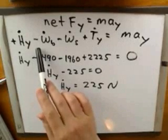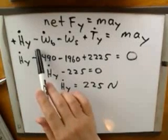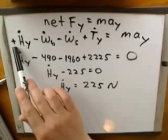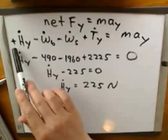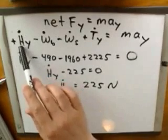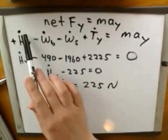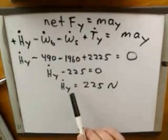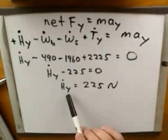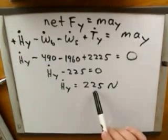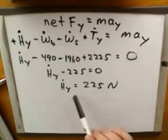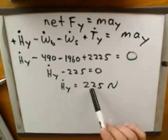Well, going back, since we guessed that hinge force Y was up, we put in a plus sign to indicate that direction, and then a dot to indicate that this variable just stands for the magnitude of hinge force Y. Notice that mathematically this variable came out to be positive, and that really has to be the case because it stands for a magnitude, and magnitudes have to be positive.